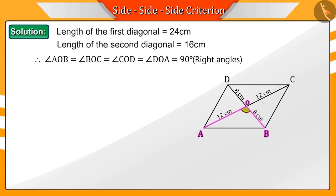That is why angles AOB, BOC, COD, and DOA are right angles—that is, they are 90 degrees.